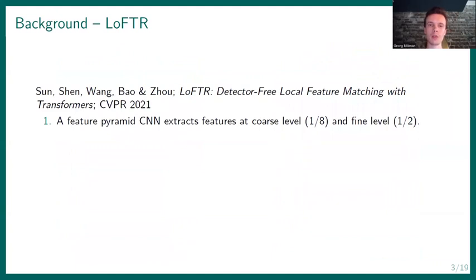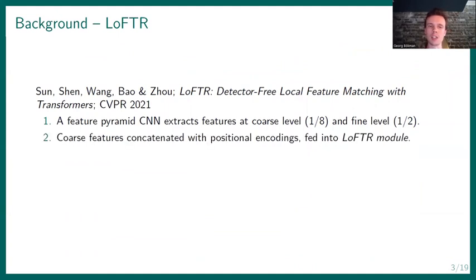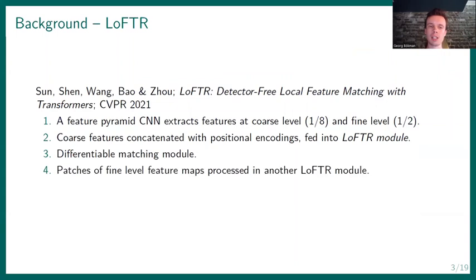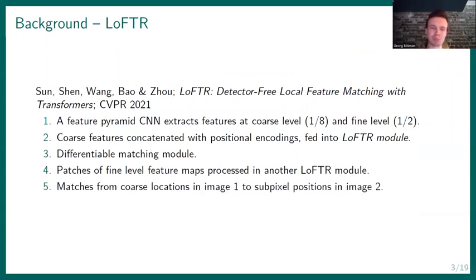Here's a quick description of the LoFTR method from CVPR last year. A feature pyramid CNN is used to extract features at two levels. Then the coarse features are concatenated with some positional encodings and fed into a type of transformer module. Then there's a differentiable matching module. Then patches of fine level feature maps are cropped out and processed in another LoFTR module. And finally we get output matches from coarse locations in the first image to sub-pixel locations in the second image.